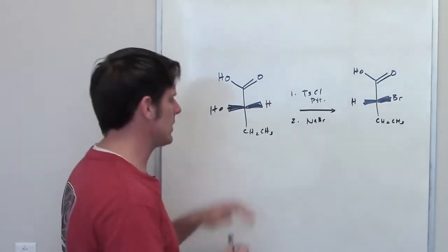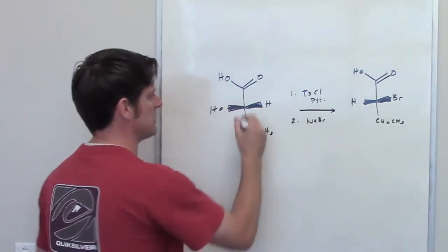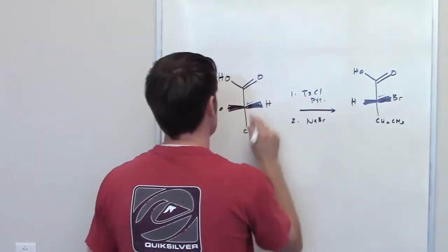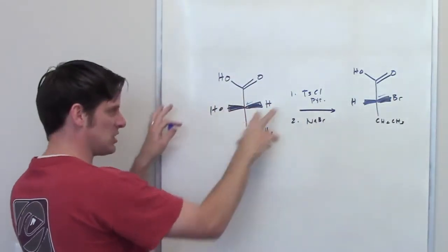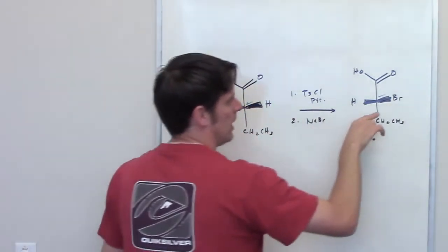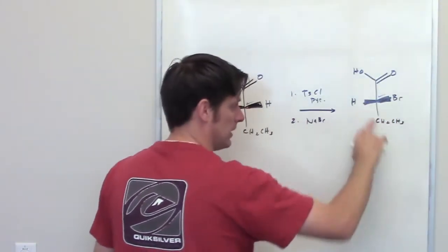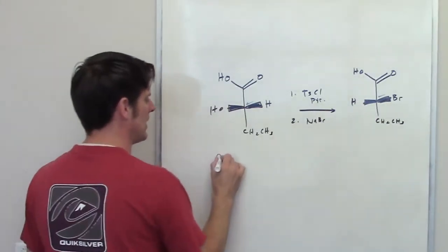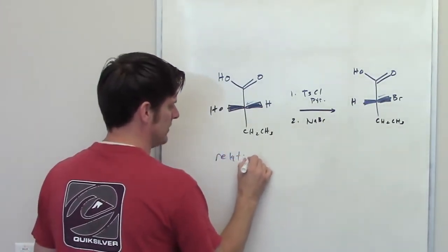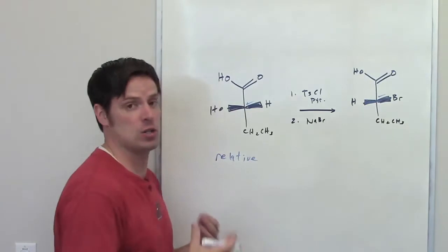What do you notice about the stereoconfiguration of our stereocenters at these positions here and here? Well, you'll notice that the OH is pointing to the left in this molecule and that the bromide, or the bromine, sorry, is pointing to the right in this one. What does that mean?